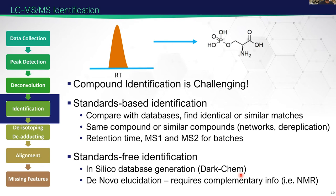We then go on to identification, which is really the most challenging part. By and large, we use standards-based identification, where we compare our measured data with reference databases to try and find either the same compound or similar molecules. We can use retention time and both mass spectra domains to compare to a database. There are also standards-free methods — either in silico ones where you generate a database computationally, or if you have a completely unknown molecule, you might use NMR combined with preparative LC separations to isolate pure compounds.